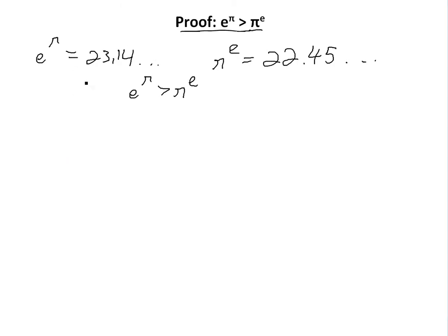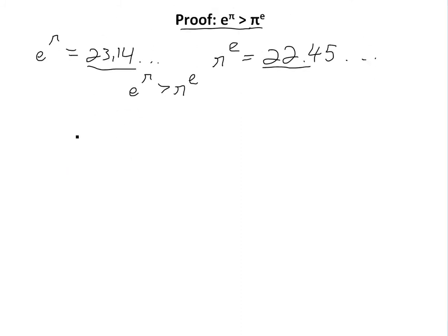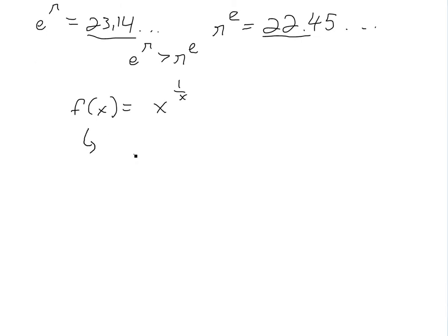I'll show you a proof without using a calculator, because using the calculator you're just going to get a number — you don't really know exactly why. So I'll show you why this is true. We'll use the equation f of x equals x to the one over x — it's a special kind of equation. We'll simplify the writing and just call it y equals x to the one over x.